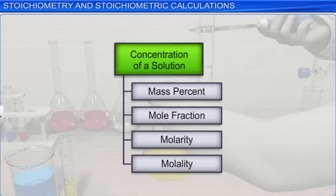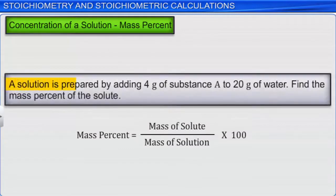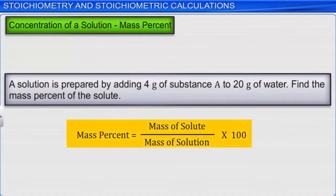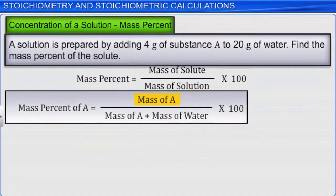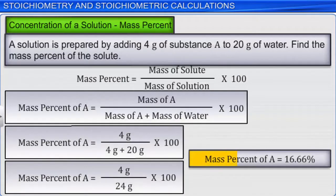The mass percent of a solution is determined by dividing the mass of the solute by the mass of the solution and multiplying by 100. For example, let's say a solution is prepared by adding 4 grams of substance A to 20 grams of water. We need to find the mass percent of the solute. Dividing the mass of A by the total mass of the solution (mass of A plus mass of water), we get the mass percent of A as 16.66.